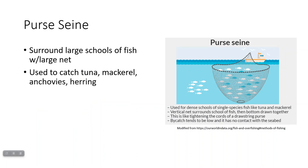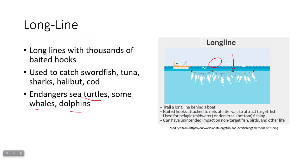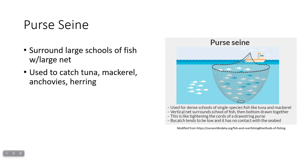In purse seine fishing, you put a large net around a school of fish and then draw it closed like a drawstring, so the fish can't escape out the top, then haul it onto the boat. This happens while the boat is stationary, targeting a particular school that is clustered together and not moving around much. It's used for dense schools of a single fish species.